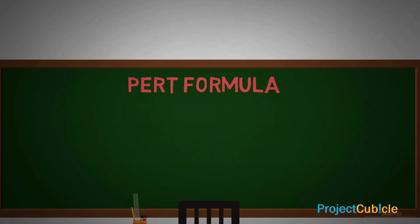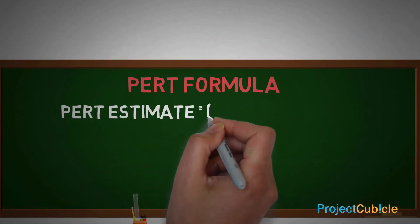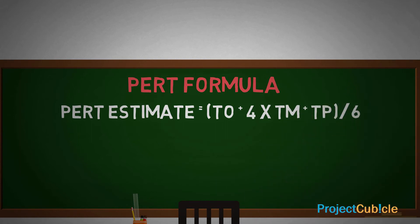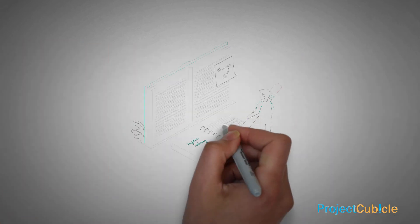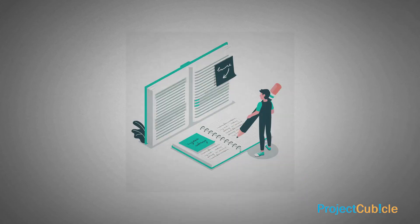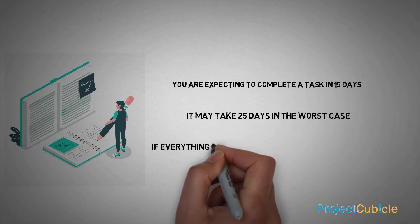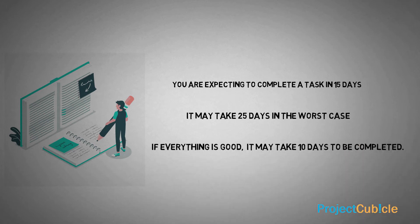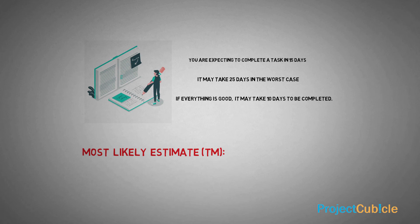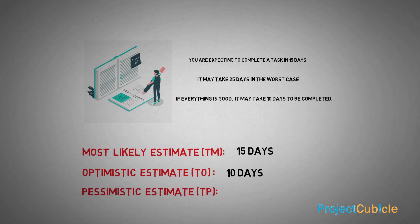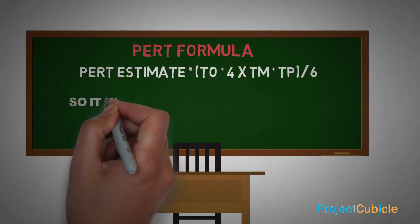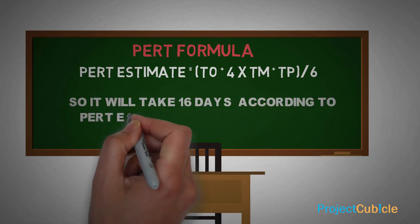PERT formula. For example, you are expecting to complete a task in 15 days. However, it may take 25 days in the worst case, and if everything goes well, it may take 10 days to be completed. Most likely estimate: 15 days. Optimistic estimate: 10 days. Pessimistic estimate: 25 days. So it will take 16 days according to the PERT estimate.